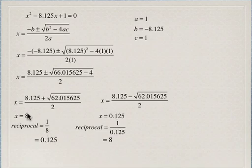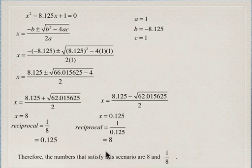In both cases, the sum is going to be 8.125. So 8 plus its reciprocal is 8.125, and if x is 1/8 or 0.125, the reciprocal is 8 and the sum again equals 8.125. That means the numbers that satisfy the scenario are 8 and 1/8.